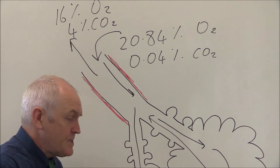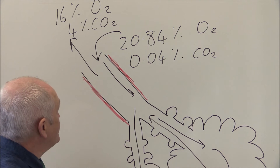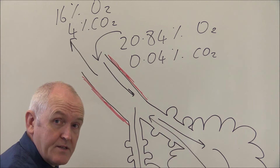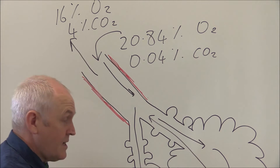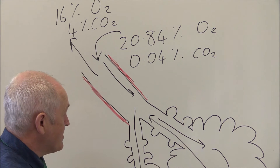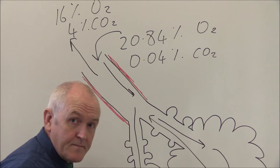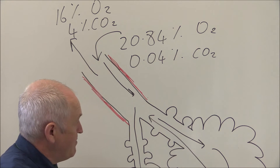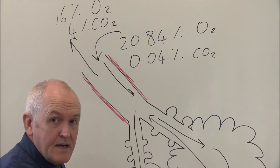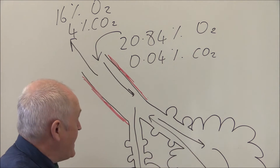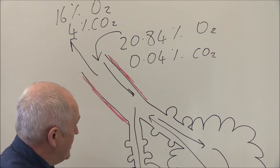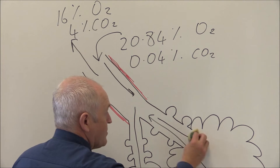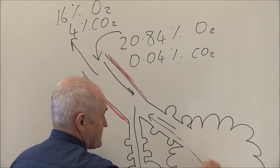Exhaled air is much higher in carbon dioxide — maybe about 4%. This is because oxygen is absorbed into the blood, and carbon dioxide is excreted from the blood into the air in the alveoli.